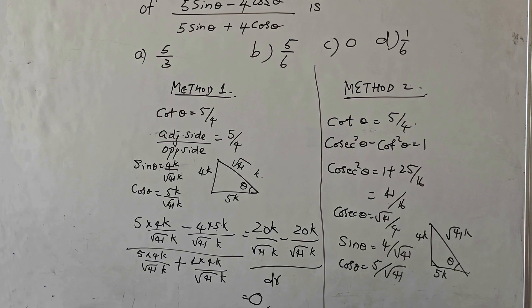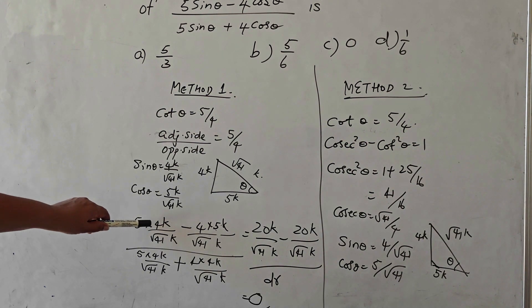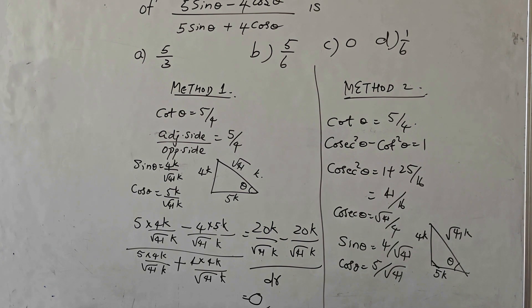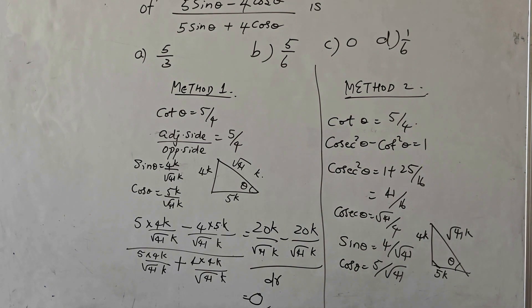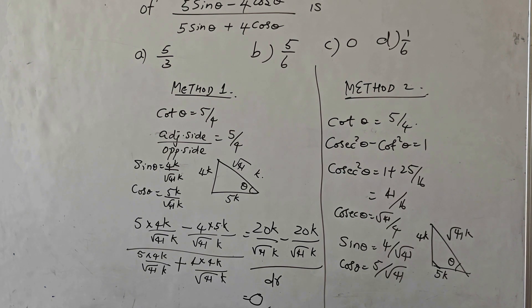Now it is easy to find sin θ and cos θ. After getting those values I substituted into 5 sin θ − 4 cos θ over the denominator. In the numerator I get 5 × 4k and 4 × 5k, both giving 20k, so the numerator becomes 0. I do not even need to solve the denominator — the final value is 0.